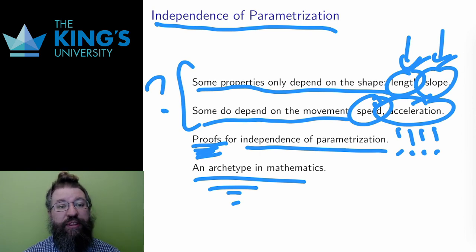I need to choose a description to do the calculations, but then I have to prove that all descriptions will give the same answer. I have to prove independence from the description. This happens all the time in mathematics, and so parametrization curves are a great first example of this pattern.